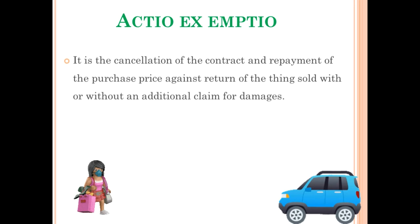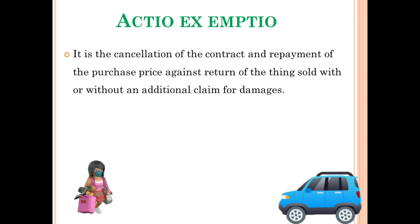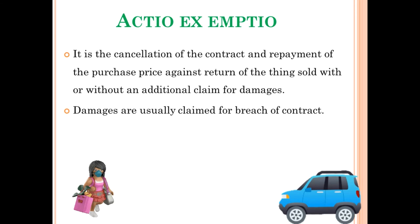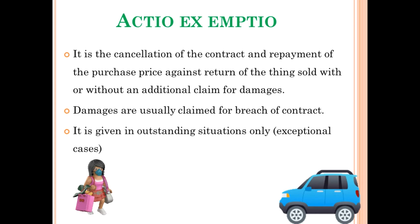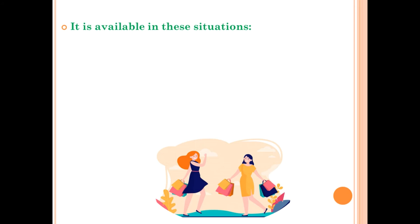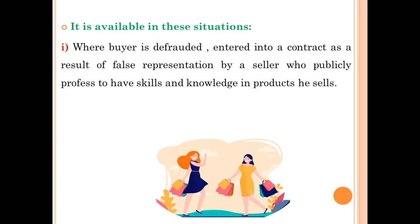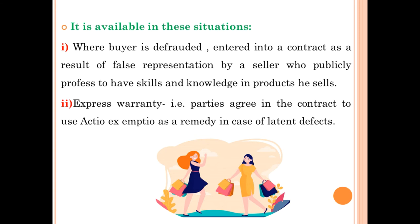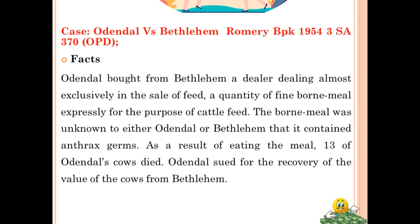Actio ex empto is the cancellation of the contract and repayment of the purchase price against the return of the thing sold, with or without an additional claim for damages. Damages are usually claimed here for breach of contract. It is given only in exceptional cases — where the buyer was defrauded, or where the seller publicly professed to have skills and knowledge in the products he sells, or where there is an express warranty in the contract to use actio ex empto as a remedy in case of latent defects.